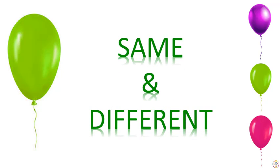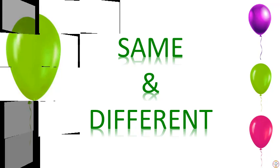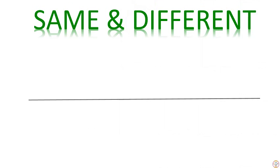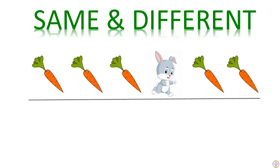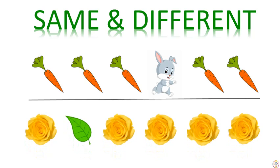Our first concept is same and different. I will share a few sets of objects and you have to find out which ones are same and which one is different. In the given set of pictures, the objects that look alike are same and the odd one out is different. So here the carrots are same and the bunny is different. Now let's check out the next set of objects.